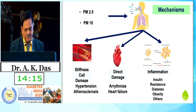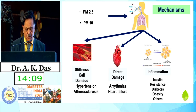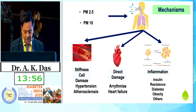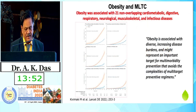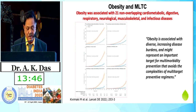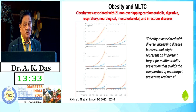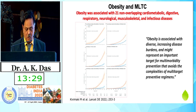This accelerated aging can give rise to stiffness of the cell, cell damage, hypertension, atherosclerosis, and produce direct damage leading to arrhythmia and heart failure, and through inflammation to insulin resistance, giving rise to diabetes per se, obesity, and others. It has also been shown that obesity is associated with 21 non-overlapping cardiometabolic, digestive, respiratory, and neurological diseases, and today type 2 diabetes is almost synonymous with obesity. As BMI increases, the multimorbidity increases from 0.9 to 16 — meaning the higher the BMI in a diabetic, the greater the multimorbidity.